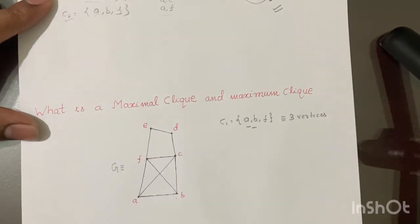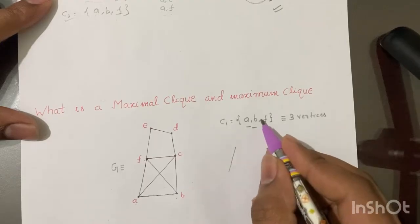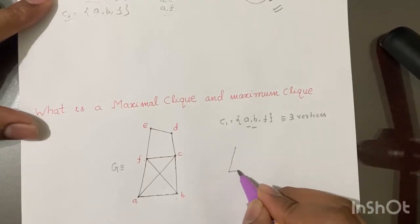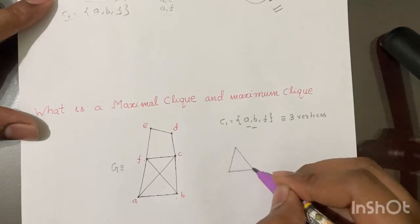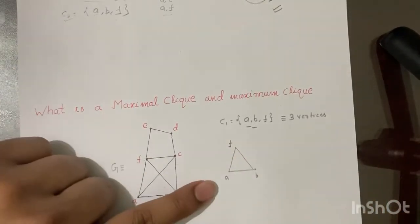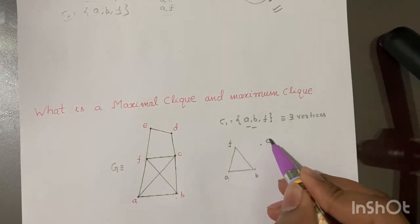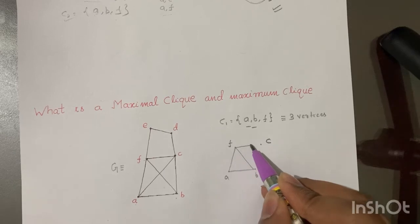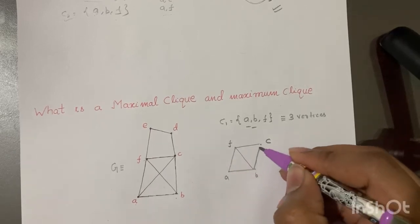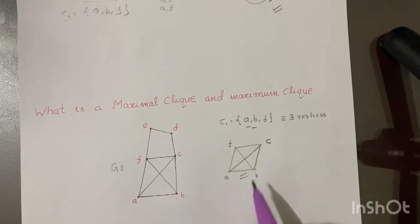Now this C1 is a clique. But the interesting point is, when you create a graph with these vertices A, B, and F, you get something. This is a clique in itself. But in this graph, you can add the vertex C and join the edges similar to the graph G. This also forms a clique.